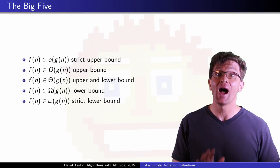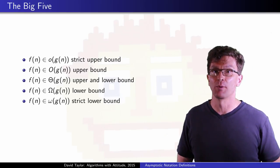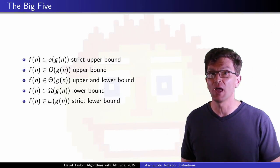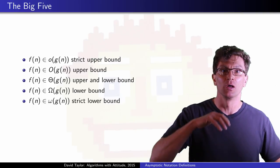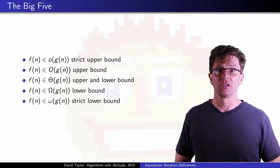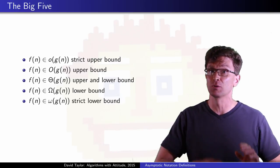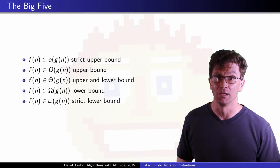Extending this, we get five different asymptotic notations. We have little o for a strict upper bound, big O for an upper bound, theta for a tight bound, big omega for a lower bound, and little omega for a strict lower bound. Some texts introduce even more asymptotic notations, which lets you ignore polylogarithmic multiplicative factors, but I won't do that here.